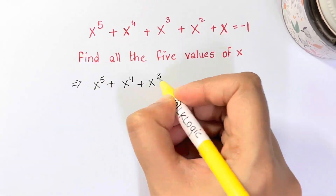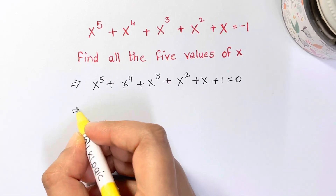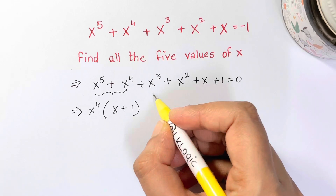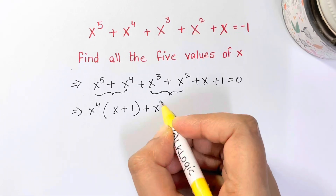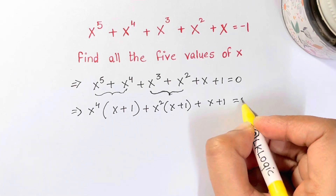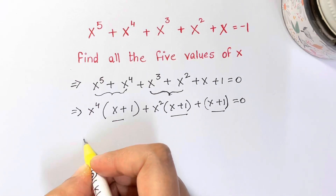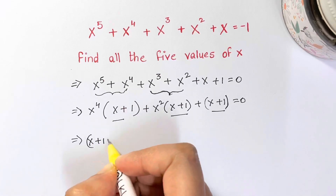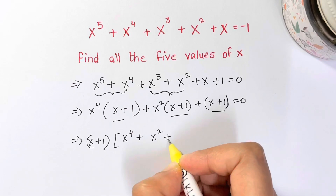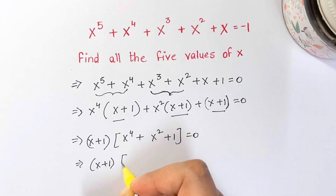We rewrite the equation by moving -1 to the left side. We factor out x⁴ from the first two terms giving x⁴(x+1), then factor out x² from the next two terms giving x²(x+1), leaving +(x+1). Since (x+1) is common throughout, we factor it out: (x+1)(x⁴ + x² + 1) = 0.